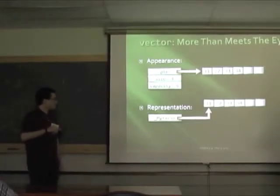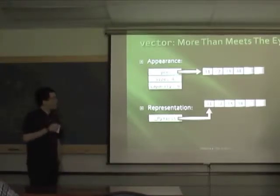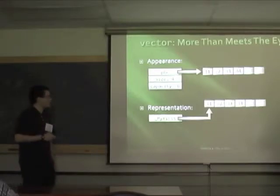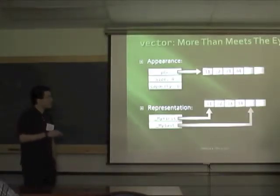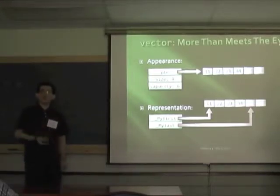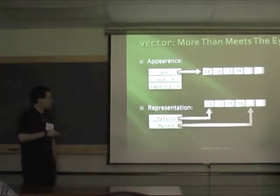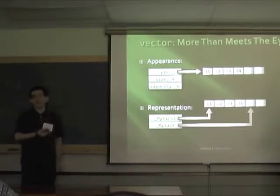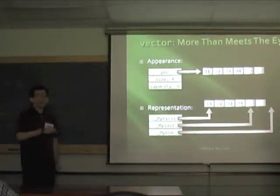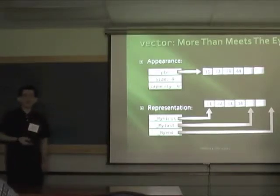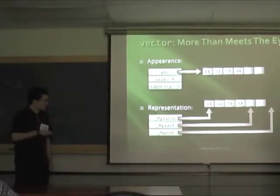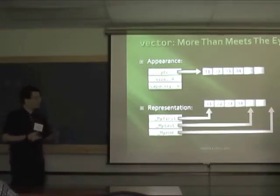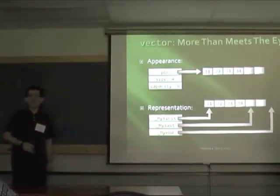It gets more complicated with the size. We don't actually store a size field of type size_t. Instead, we store a pointer called `_Mylast` that points one beyond the last actual element in the vector. This is convenient because when returning iterators — which are just wrapped pointers — if you ask for begin, you get a wrapped `_Myfirst`, and if you ask for end, you get `_Mylast`. Only if you ask for size do we subtract the pointers. Our capacity is stored as another pointer to one past the whole block, called `_Myend`.